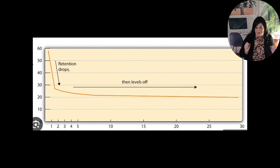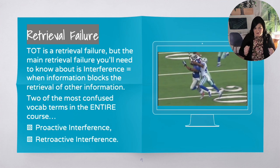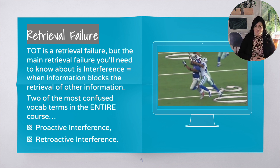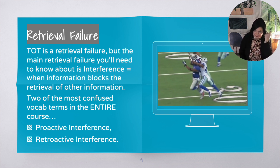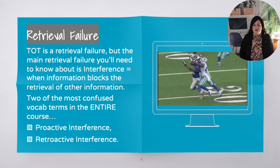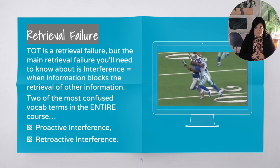Retrieval failure means that although the information is retained in memory stores, it cannot be accessed. One example of a retrieval failure is called tip of the tongue — you know it's there, you just can't bring out the information. Like: oh, I know who that guy is in that movie, what's his name again? That's TOT — tip of tongue. If I were to show you a picture, that would be the proper cue and you'd get it. Without the proper cues to help you retrieve it, that's a retrieval failure.